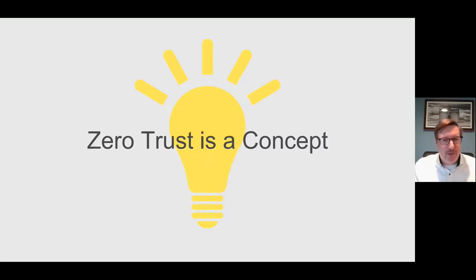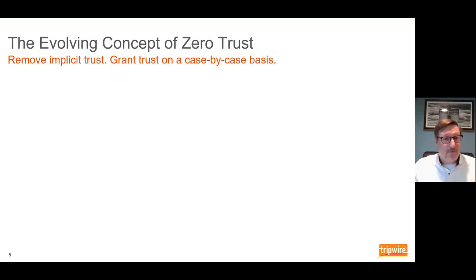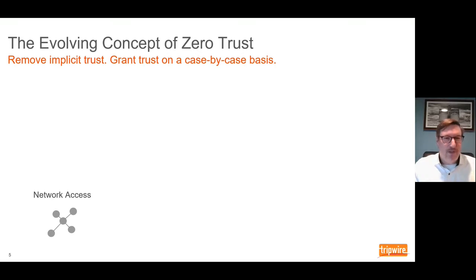Zero trust as a concept is really born out of that shifting technology landscape. In order to understand where zero trust is today, we do have to look at its evolution. If the core of zero trust is really about removing implicit trust and then granting trust on a case-by-case basis, the starting point for doing that is really at the network level. You can think back to network access control — a term with historical context — but ultimately the genesis of some of the zero trust concepts we work on today.